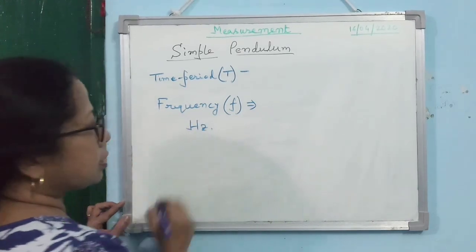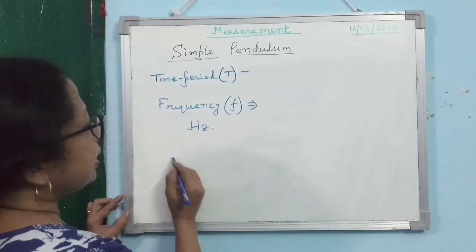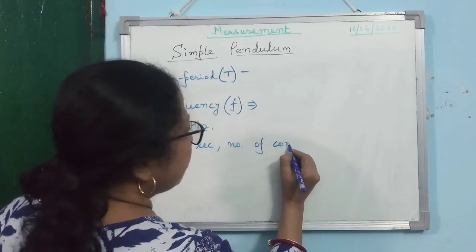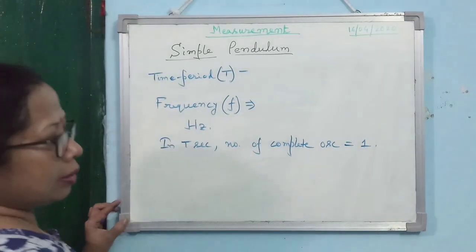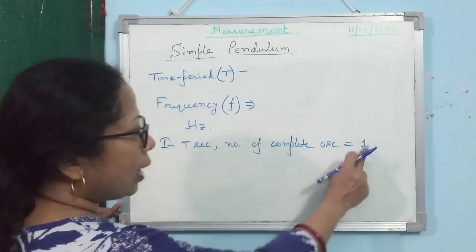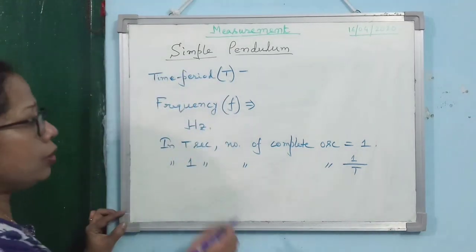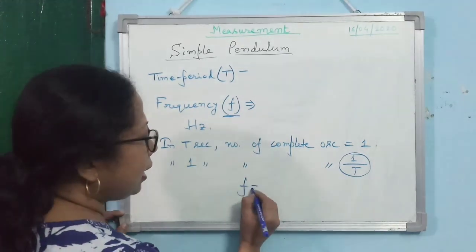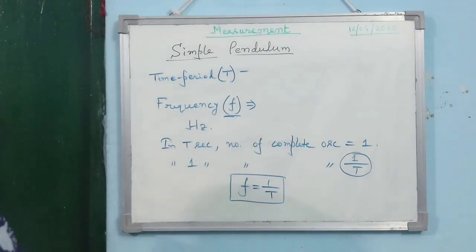The SI unit of frequency is hertz. There is a nice relation between time period and frequency. If the time period is T seconds, then in T seconds the number of complete oscillations is 1. So in one second, the number of complete oscillations is 1 divided by T. Since number of complete oscillations per second is frequency, we get: frequency equals 1 divided by time period.